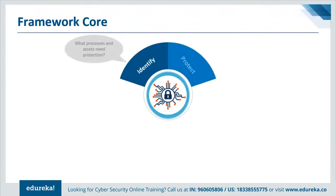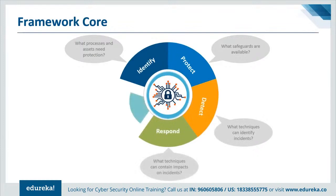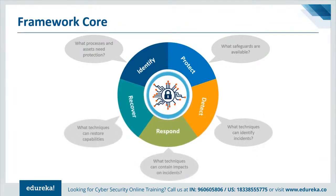The core is a set of desired cybersecurity activities and outcomes organized into categories and aligned to informative references. The framework core is designed to be intuitive and to act as a translation layer enabling communication between multidisciplinary teams using simplistic and non-technical language. The core consists of three parts: functions, categories, and subcategories. It includes five high-level functions — Identify, Protect, Detect, Respond, and Recover — which are applicable not only to cybersecurity risk management but to risk management as a whole.